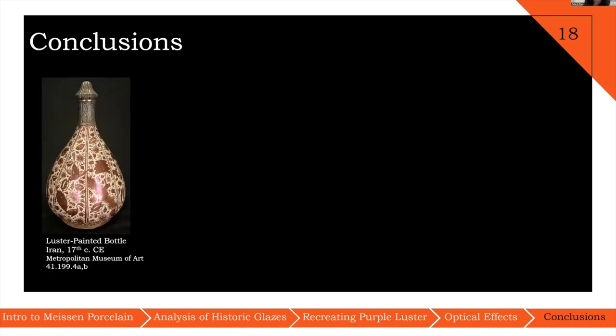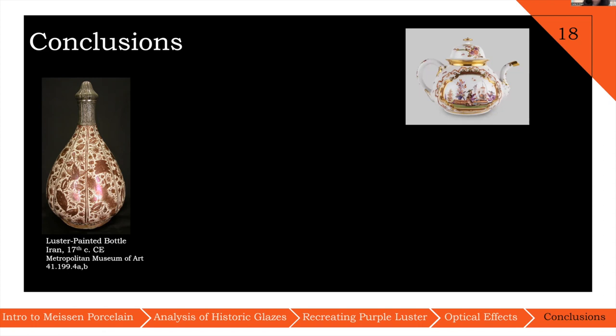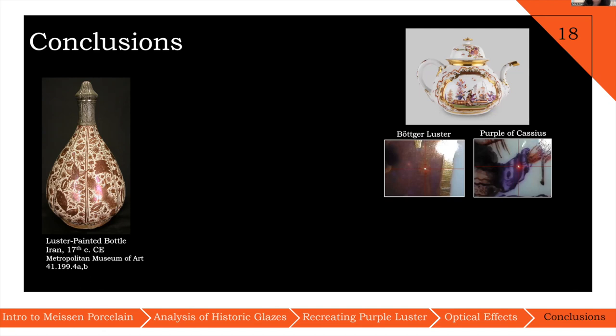In conclusion, Böttger luster belongs to the family of lusterware, a type of metallic decoration that has been employed by artisans since 9th century Common Era Mesopotamia. Shown here is an example of red luster produced by copper nanoparticles from 17th century Iran. In Böttger luster, purple luster is achieved by the presence of gold nanoparticles. It can be distinguished from other gold-based purple colorants such as purple of Cassius by its lack of tin and, most importantly, its method of preparation. The use of Böttger luster was very brief, commencing around 1710 or 1719 and wrapping up after 1735. It has not persisted since then, and as such, the documentation of how this overglaze enamel was produced and used is limited to the 18th century.